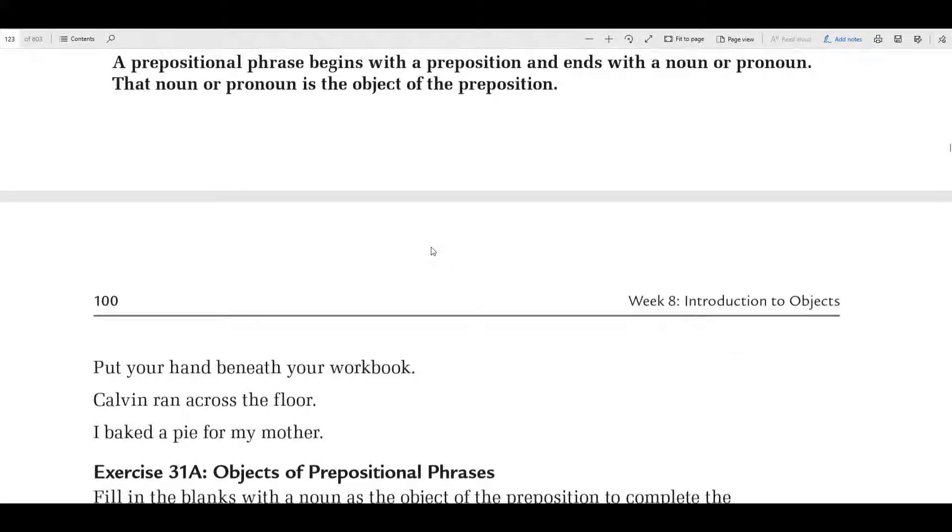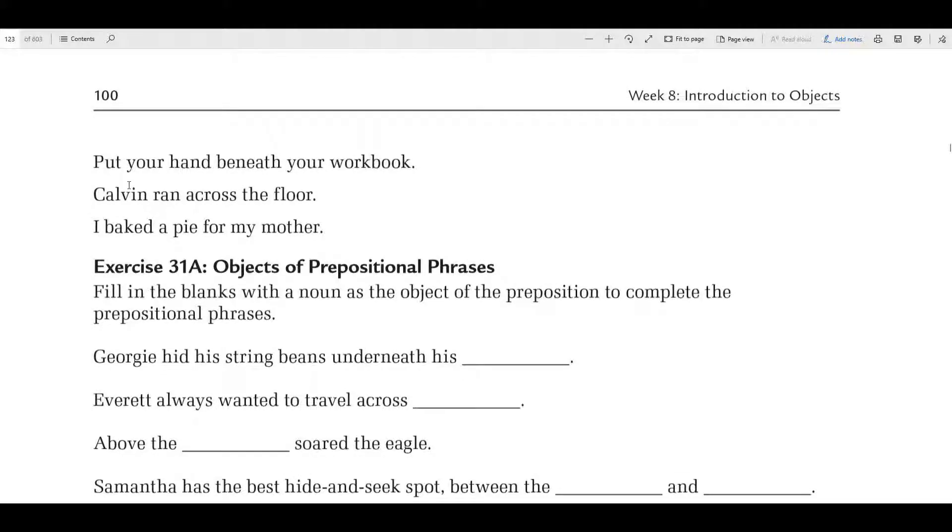Beneath your workbook. Your prepositional phrase is this. Calvin ran across the floor. Across the floor. Across is your preposition. I baked a pie for my mother. For is your preposition. For my mother is a prepositional phrase.